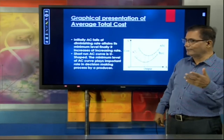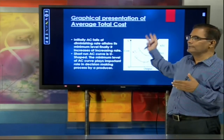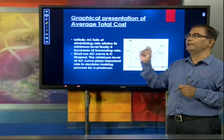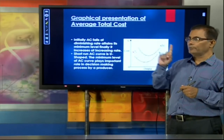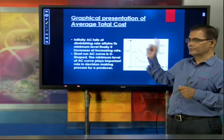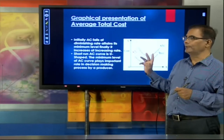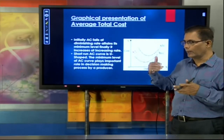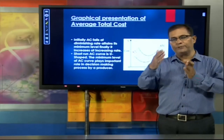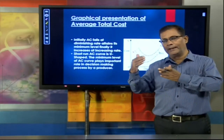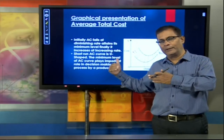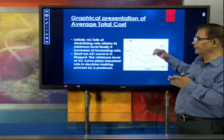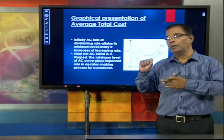Why is ATC always in an upper position than AVC? Because of the additional value of AFC. At the first unit of output, AFC was 10 rupees and AVC was 10 rupees — obviously the gap is large. As units of output increase, the gap between the two curves becomes narrower.